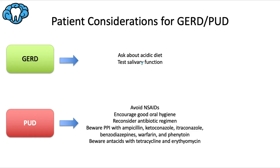Assessing salivary parameters is not something we think about often, but it's actually a good idea in these patients. There are commercially available diagnostic kits that can test things like salivary flow rate. For peptic ulcer disease, the big one is to avoid NSAIDs, as they are absolutely connected to peptic ulcers.